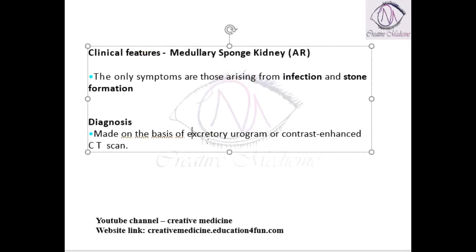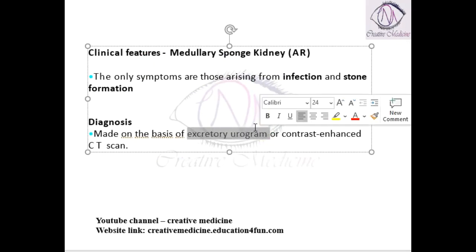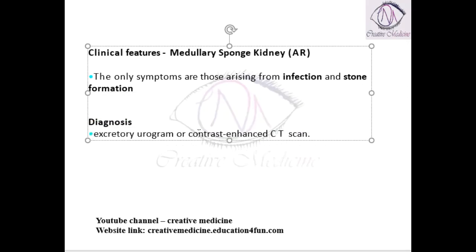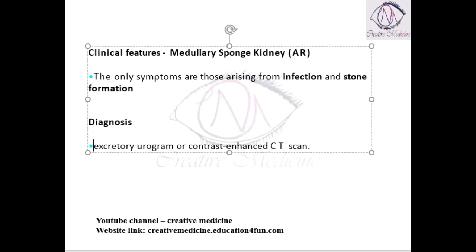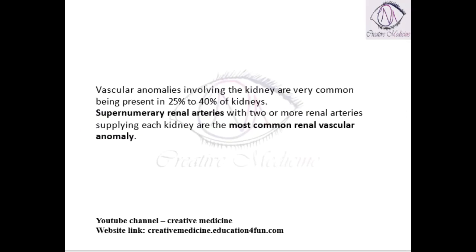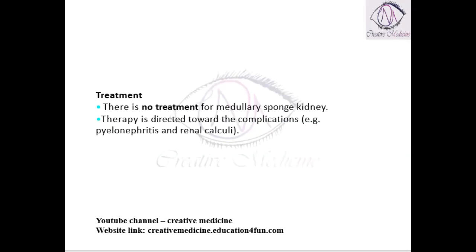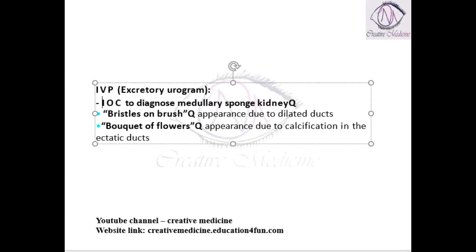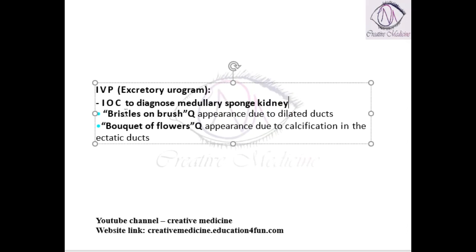Diagnosis is mainly based on the excretory urogram or contrast-enhanced CT scan. With the help of these two we can diagnose medullary sponge disease. The intravenous pyelogram, also called excretory urogram, is the investigation of choice for medullary sponge disease. On the intravenous pyelogram you will see the presence of dilated ducts.